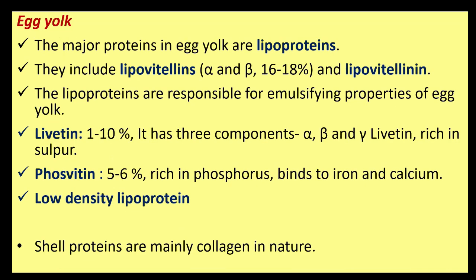In egg yolk, the major proteins are lipoproteins, including lipovitellins alpha and beta (16 to 18%) and lipovitellenin. The lipoproteins are responsible for the emulsifying properties of egg yolk. Livetin (1 to 10%) has three components — alpha, beta, and gamma livetin — and is rich in sulfur. Phosvitin (5 to 6%) is rich in phosphorus and binds to iron and calcium. The yolk also contains low-density lipoproteins. Shell proteins are mainly collagen in nature.